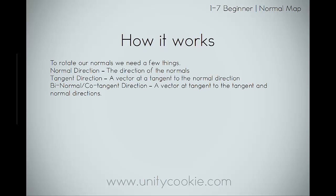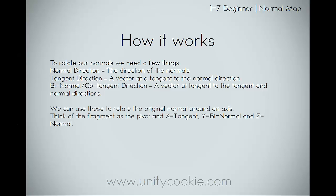To rotate the normals, we need a few things. We need the normal direction — the direction the normals face. We need the tangent direction, which is a vector at the tangent of the normal direction, meaning at 90 degrees. Then we have a binormal, also called a cotangent direction — this is a vector tangent to both the tangent and normal direction, so it's 90 degrees to both. The normal direction would be Z, the tangent would be X, and the binormal would be Y. We can use these to rotate the original normal around an axis.